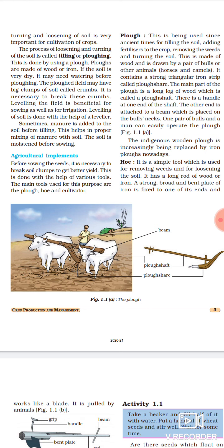One pair of bulls and a man can easily operate the plow. Is technique mein, do bull lagte hai aur ek aadmi isko easily chala sakta hai. Ab maine aapko bataya ki ye ya toh wood se ban sakti hai ya phir iron se ban sakti hai. Toh pehle ye wood se zyada banti thi, lekin ab woh replace kar diya gaya hai iron se, kyunki woh strong hoti hai aur usmein breakage ka dar nahi hota.